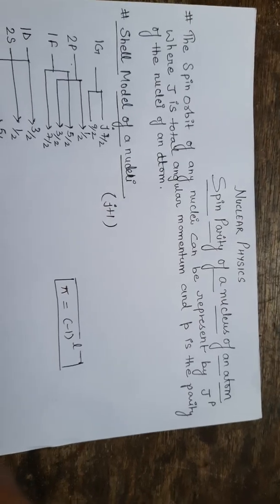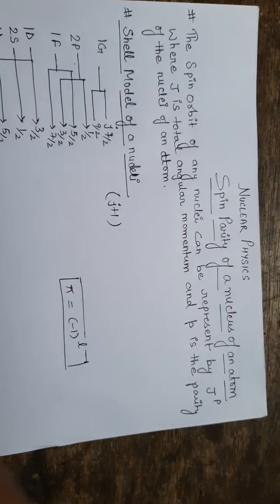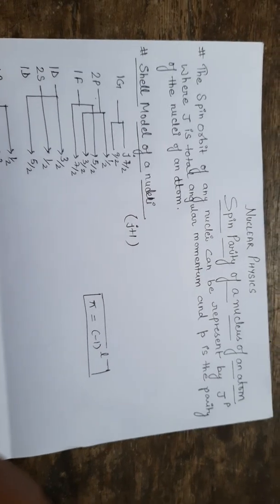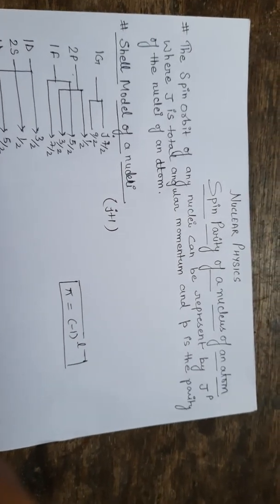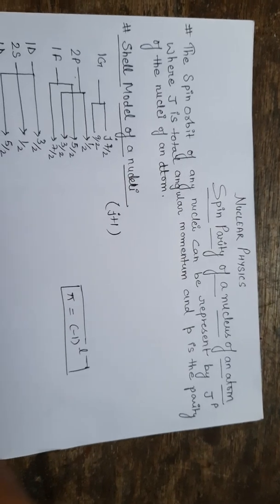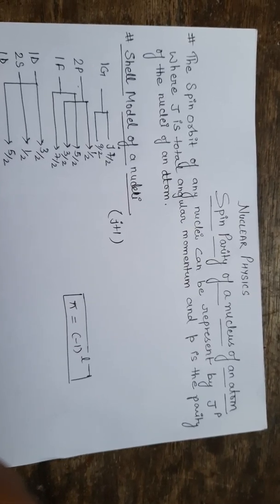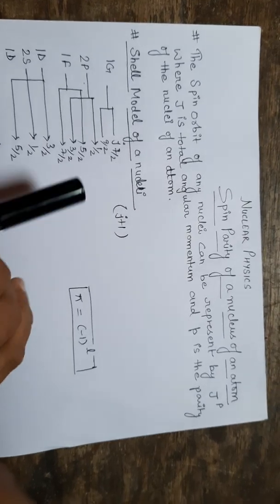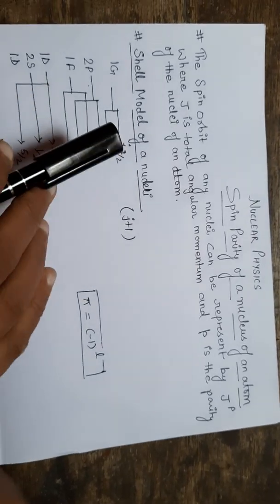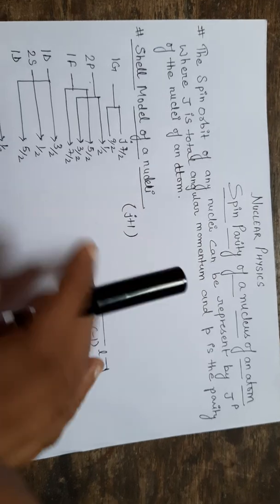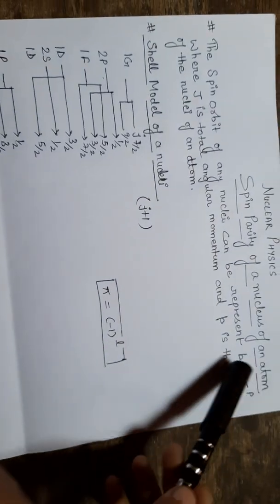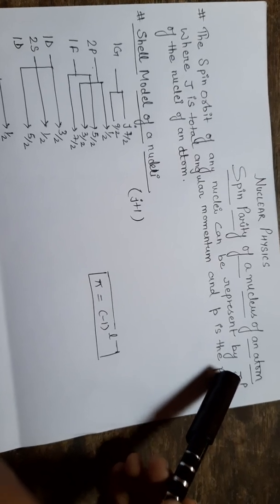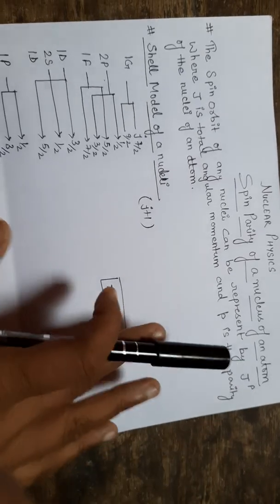Welcome back to Physical Learning Point. Today we have a discussion on a very important topic: the calculation of spin parity for the nucleus of an atom. The spin parity for any nucleus can be represented by J to the power P, where J is total angular momentum and P is the parity.